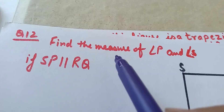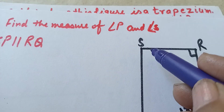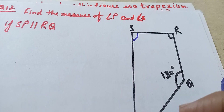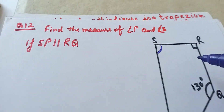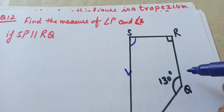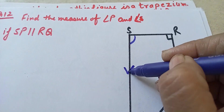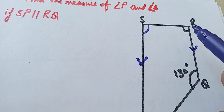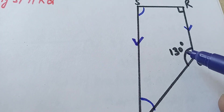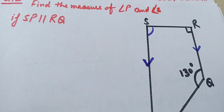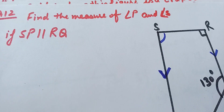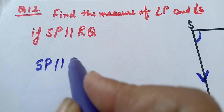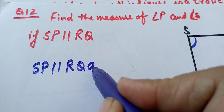Now question number 12 of this exercise: find the measurement of angle P and angle S. We have to find out these two angles. SP is parallel to RQ. It is a trapezium given with angle R = 90 degrees and angle Q = 130 degrees. By using the criteria of co-interior angles, since SP is parallel to RQ.